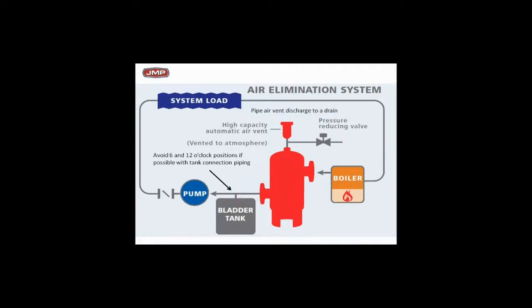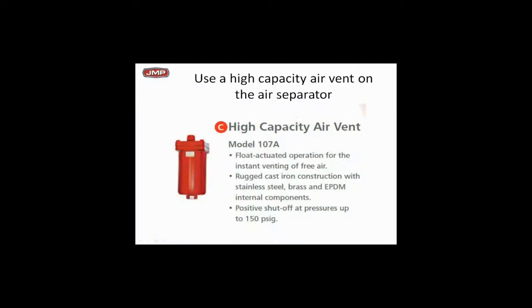Pipe the air vent discharge to drain. The vent from that should go to drain to get it down the drain so you don't get a wet floor if it starts leaking a little bit. Here's a picture of that — the float actuator, high-capacity air vents, heavy duty, rugged cast iron. You want to pipe these things to a drain somewhere in case you get a little water coming out with the air.